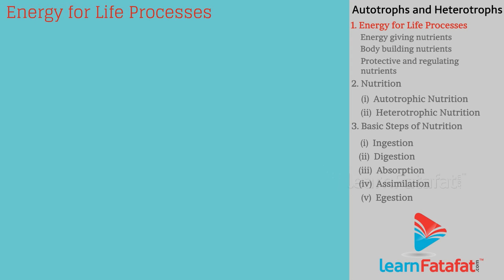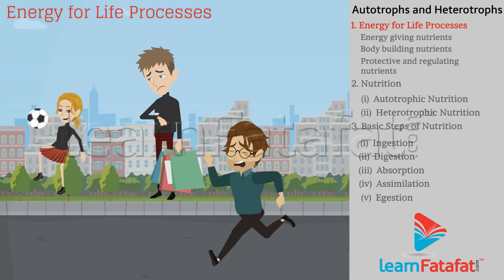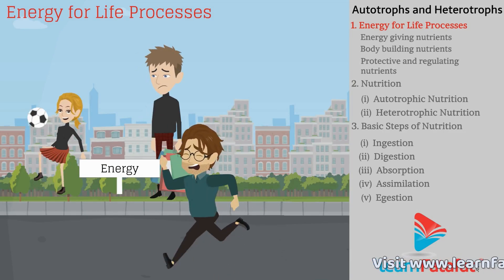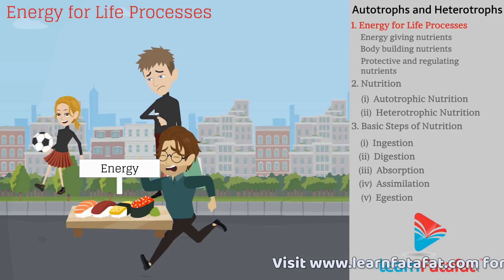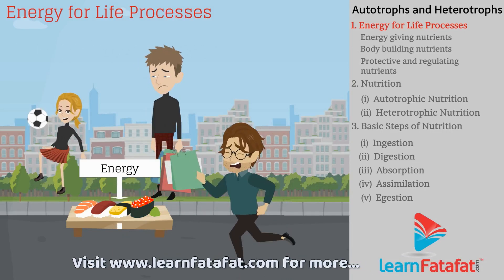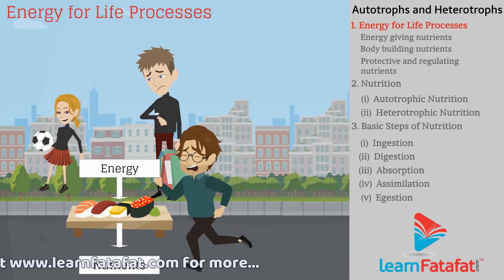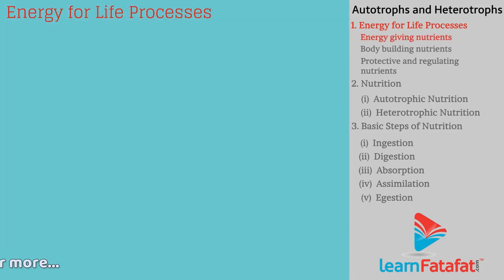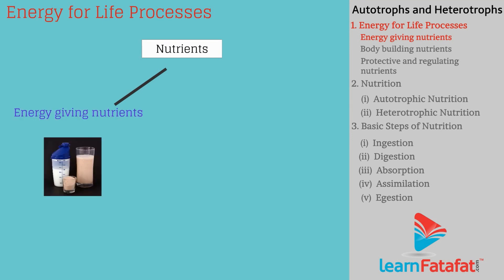Energy for Life Processes. Living organisms need energy to perform various activities. It is obtained from the food. Food contains nutrients. On the basis of functions, nutrients are divided as energy-giving nutrients, for example carbohydrates and fats.